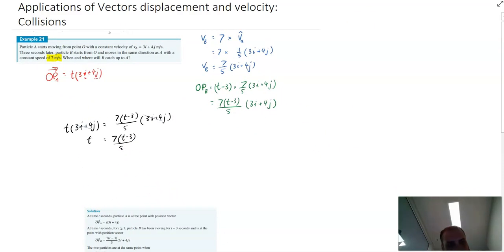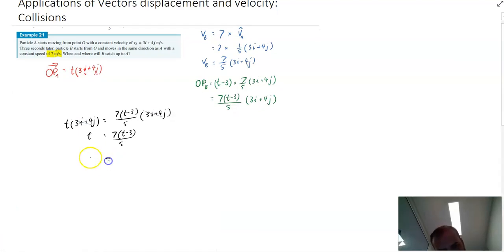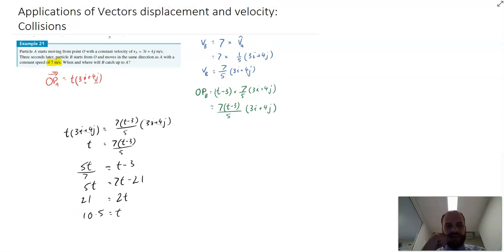So it's going to be 5T equals 7 bracket T minus 3. Multiplying both sides by 7, 5T equals 7T minus 21. And then we have 7T minus 5T, 2T equals 21. So T equals 10.5.